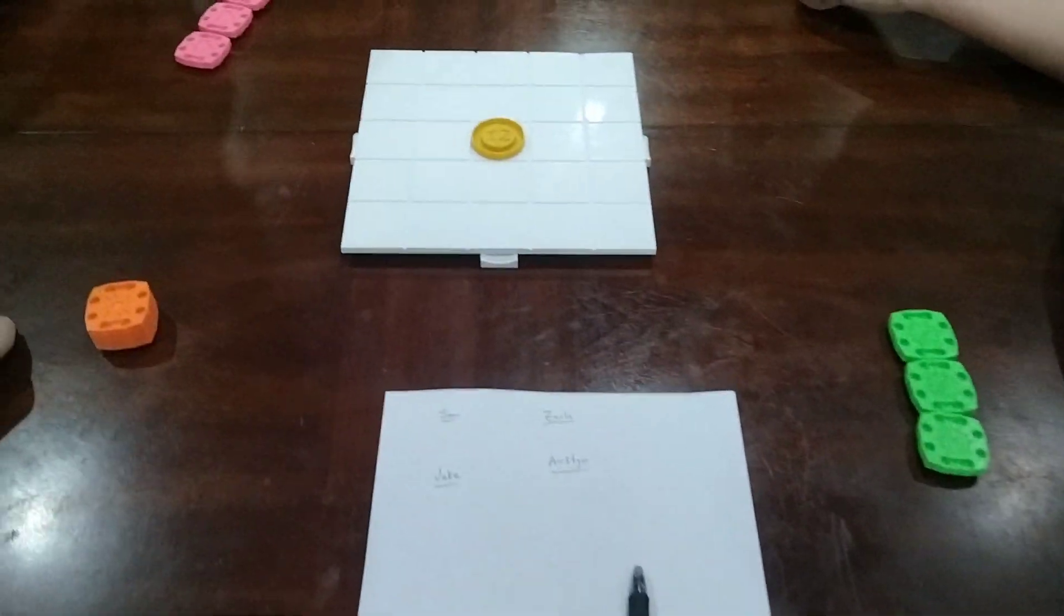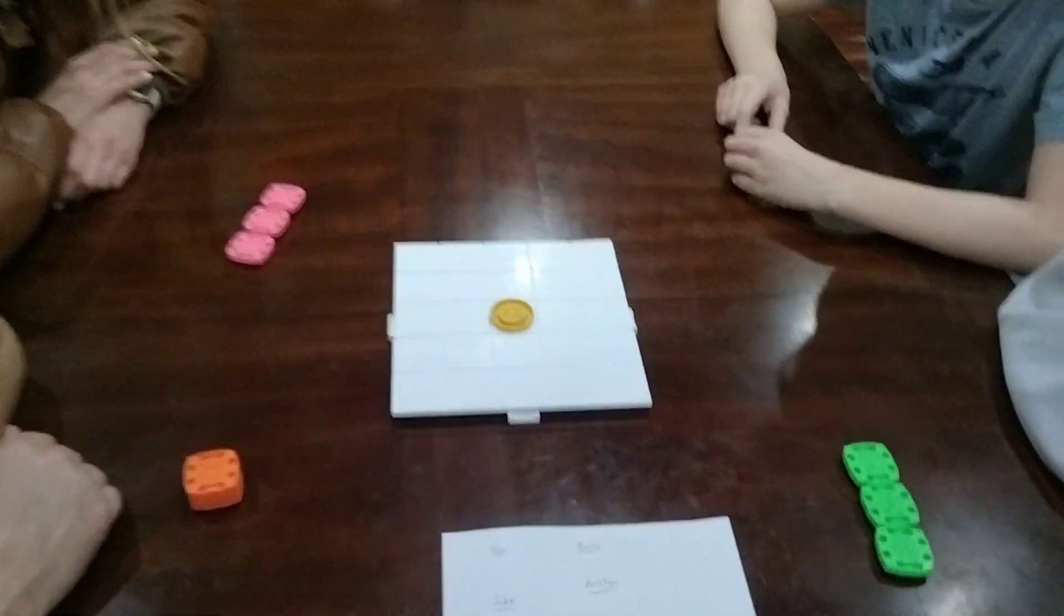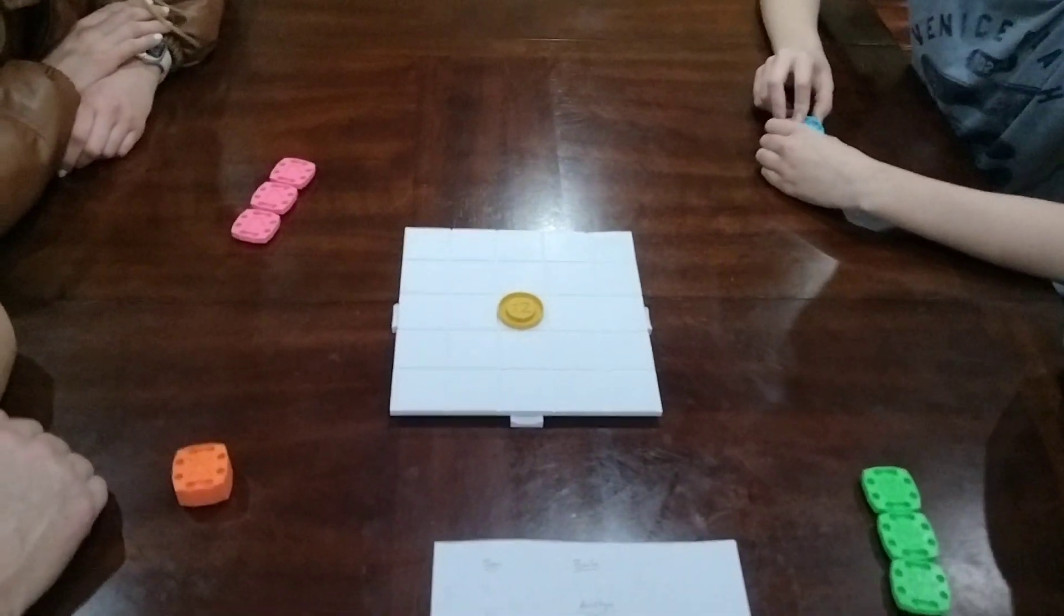So we're going to play teams. Winter and spring, Zach and Austin, are going to be facing Jake and Sam, summer and fall. The way you play is you place any piece on the board, and it pushes other pieces one space away.